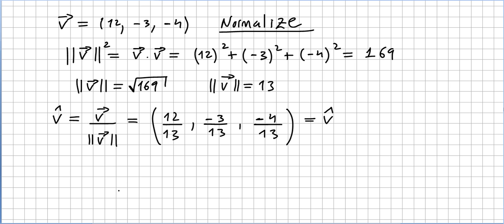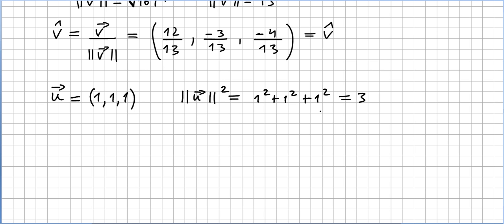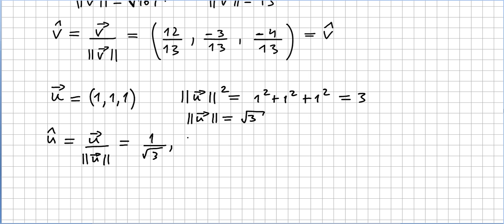Let me give one more quick example. If we have the classic vector 1, 1, 1 — my lack of imagination for examples — the squared length will be 1 squared plus 1 squared plus 1 squared, which equals 3. So the length will be the square root of 3. Let's normalize this one. U hat is u divided by the norm of u, so u hat is 1 over root 3, 1 over root 3, 1 over root 3.